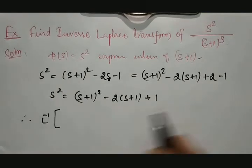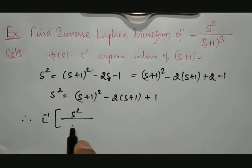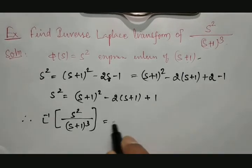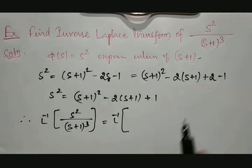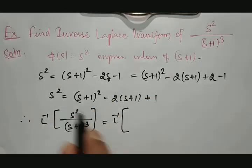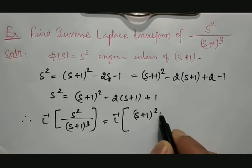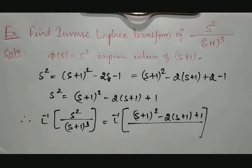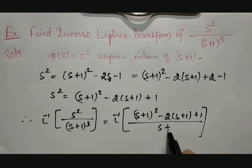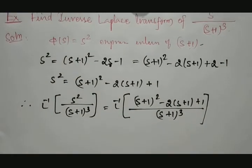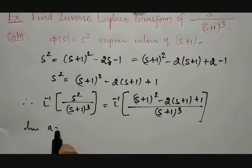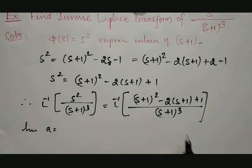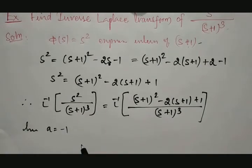So the inverse Laplace of the given example — s² divided by (s+1)³ — equals the inverse Laplace of [(s+1)² − 2(s+1) + 1] divided by (s+1)³. Here, if you compare, we usually take (s − a); but since it is (s+1), that means a is equal to minus 1.